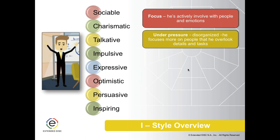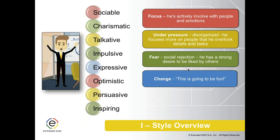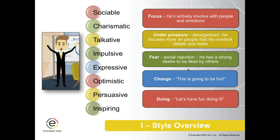Ian tends to actively focus on people and emotions — he's all about those interactions. When Ian feels pressure, he becomes disorganized, running around frantic and chaotic, because he's focusing more on people and emotions and loses track of details and tasks. His biggest fear is social rejection. He has a strong desire to be liked and included. When it comes to change, it's all fun — that overflowing optimism sees new opportunities in change. Everything for Ian is about fun.